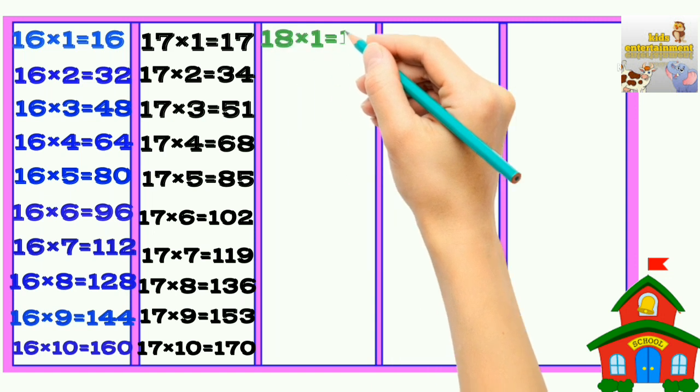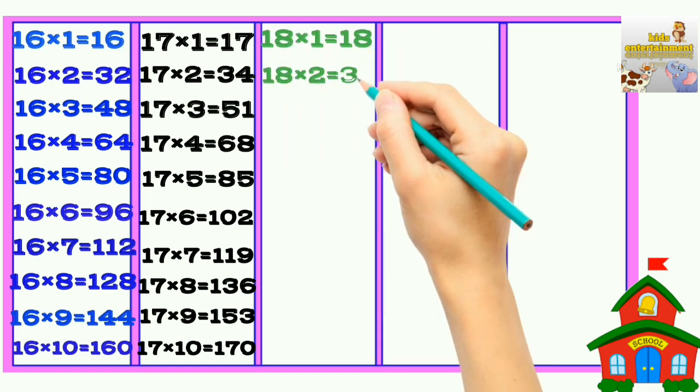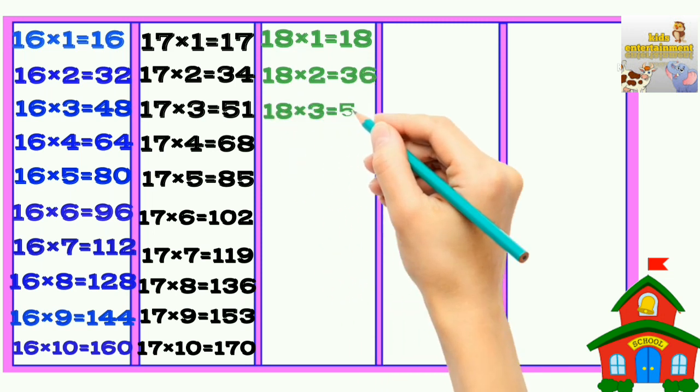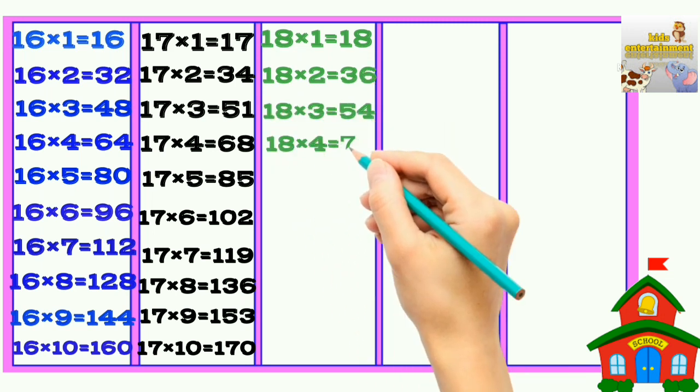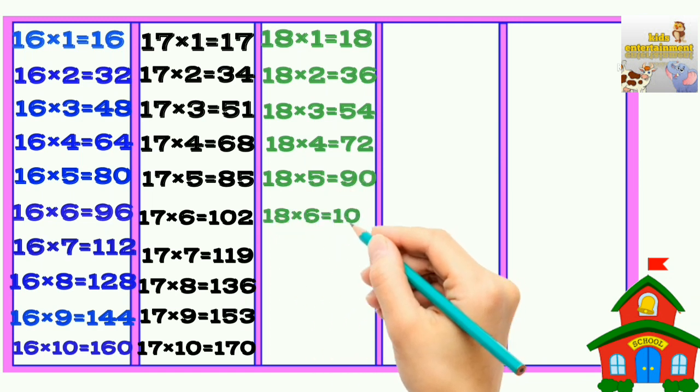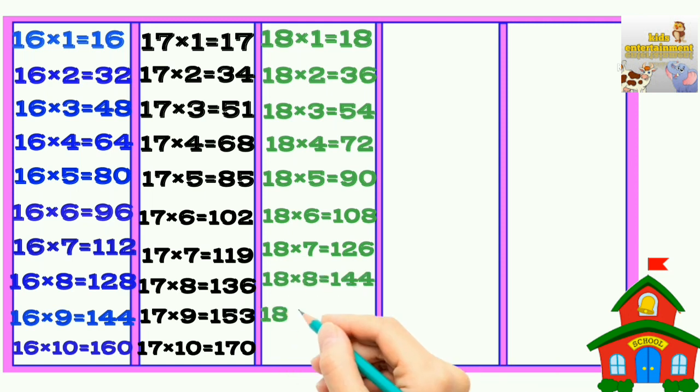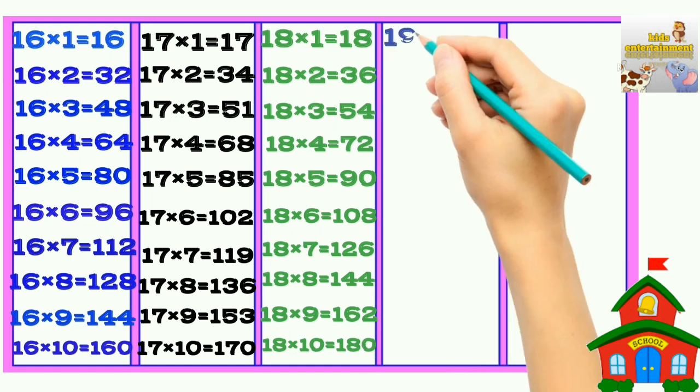18 times 1 is 18, 18 times 2 is 36, 18 times 3 is 54, 18 times 4 is 72, 18 times 5 is 90, 18 times 6 is 108, 18 times 7 is 126, 18 times 8 is 144, 18 times 9 is 162, 18 times 10 is 180.